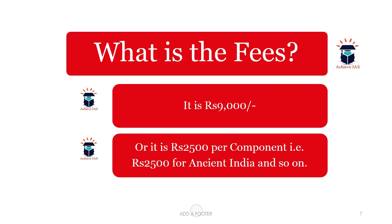As we are putting in a lot of effort, there is a fee structure. The full fee is ₹9,000. If you find that too large, you can join on a component basis — it is ₹2,500 per component, i.e., ₹2,500 each for Ancient India, Medieval India, Modern India, and World History. So you can join on a component basis as well.